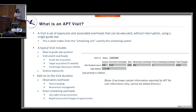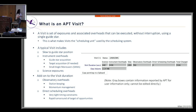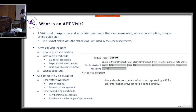When you click on a visit in APT to see its duration, it gives you the slew time, overhead time, and science time. It also includes observatory overheads such as station keeping and momentum management, and direct scheduling overheads specified by special requirements — such as a tight timing constraint or a rapid turnaround TOO. Fields displayed in a gray box are for informational use only and cannot be edited.